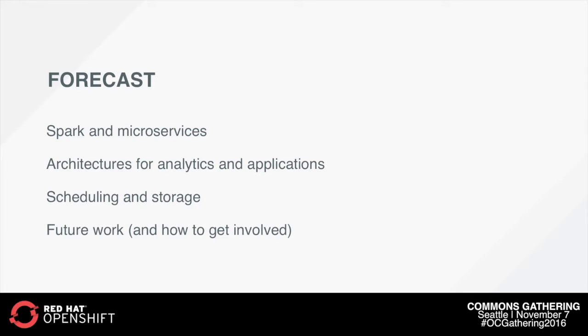In the rest of the talk, I'm going to introduce Apache Spark for those just becoming familiar with it and talk about why it's a great fit for contemporary microservice architectures. I'll talk about some architectures for contemporary data-driven applications. I'll cover two particular issues we had to solve to bring Spark to OpenShift: scheduling tasks and dealing with persistent storage. And then I'll show you how you can get involved and use this stuff yourself.